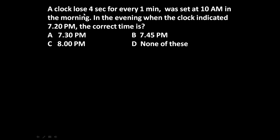The given problem is: a clock loses 4 seconds for every 1 minute. It was set at the correct time at 10 am in the morning. In the evening, when the clock indicated 7:20 pm, what is the correct time? The clock is losing 4 seconds for every 1 minute.